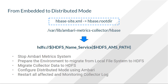In summary, we will be executing the following steps. First, we need to stop the Ambari Metrics system. Then we need to prepare the environment to migrate from local file system to HDFS. Then we need to migrate the collector data to HDFS. We need to configure distributed mode using Ambari. And finally, we need to restart all affected services and monitor collector logs. Remember, since we are working with a highly available name node, we will be using the HDFS name service instead of the name node host name.